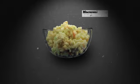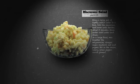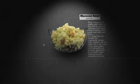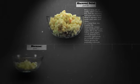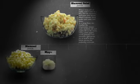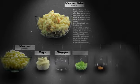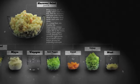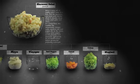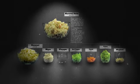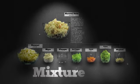Let's start with this bowl of macaroni salad. If you were to reverse a recipe for macaroni salad, you'll see it's made by mixing together a bunch of ingredients, like macaroni, mayo, vinegar, vegetables, and mustard. This type of combining is called a mixture.